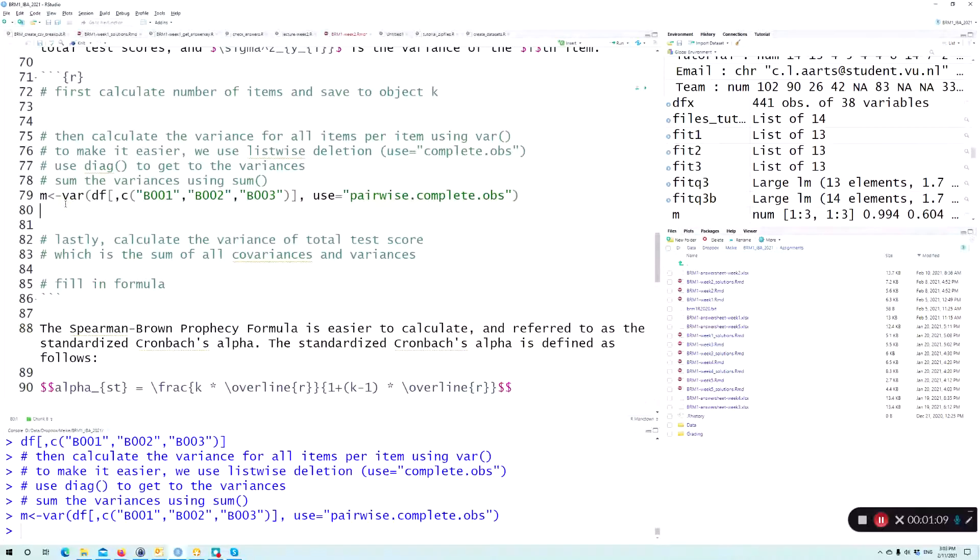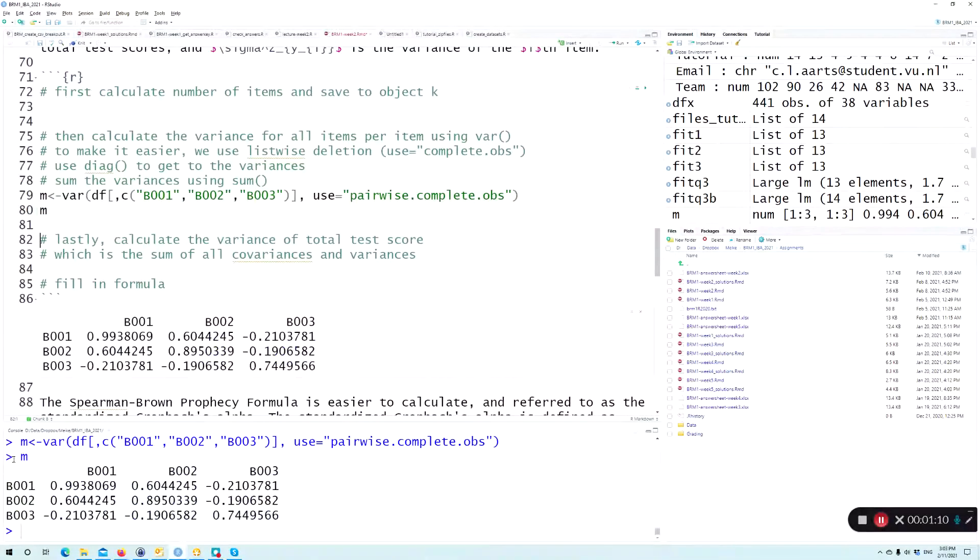Here I have the M. Now M, what does it look like? It looks like a variance, well it is a variance covariance matrix. This first number is the variance of the first item of B001. This number reflects the covariance between B001 and B002.